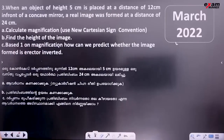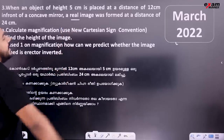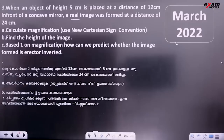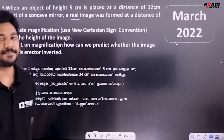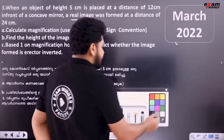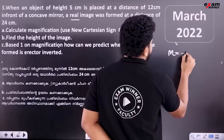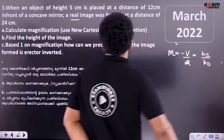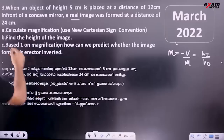When an object of height 5 cm is placed at a distance of 12 cm in front of a concave mirror, a real image was formed at a distance of 24 cm. The first thing is to calculate the magnification. We have the magnification equation: M is equal to minus v by u.